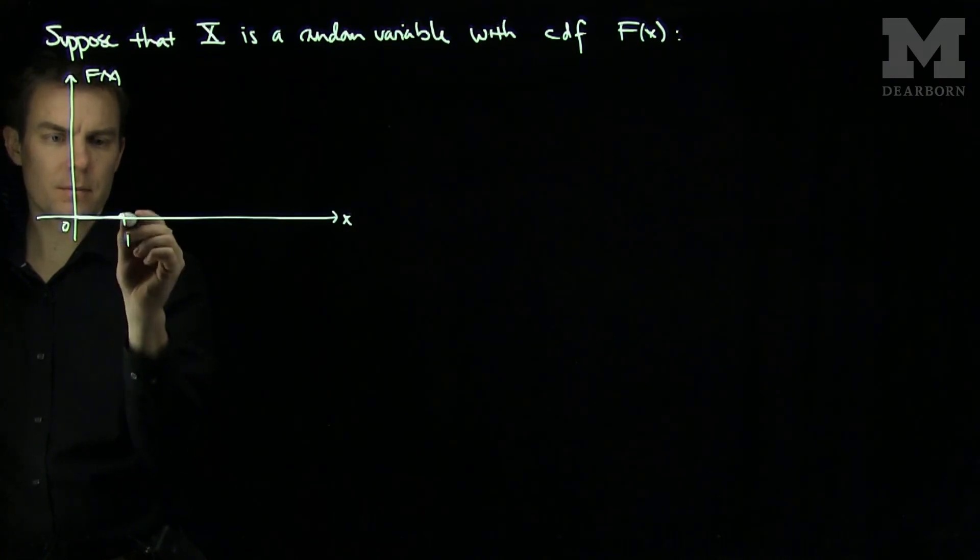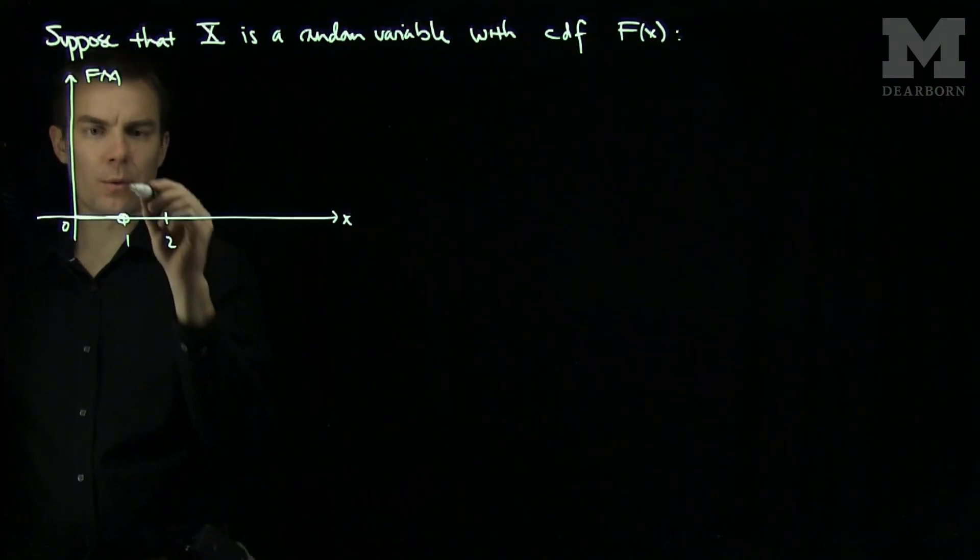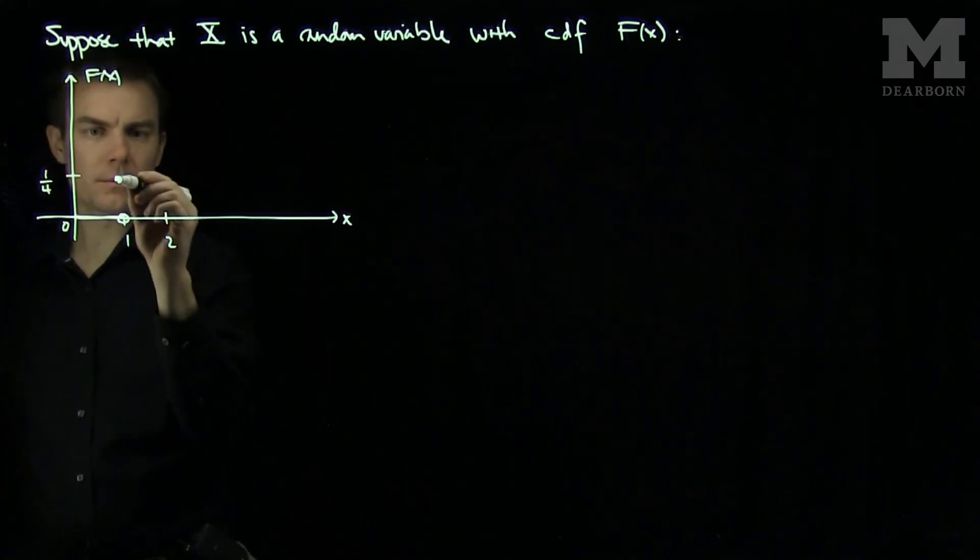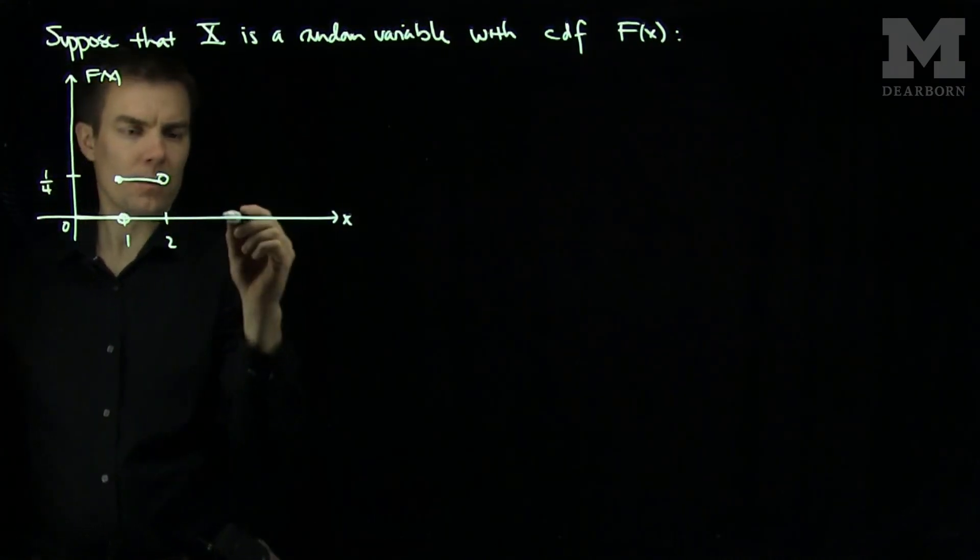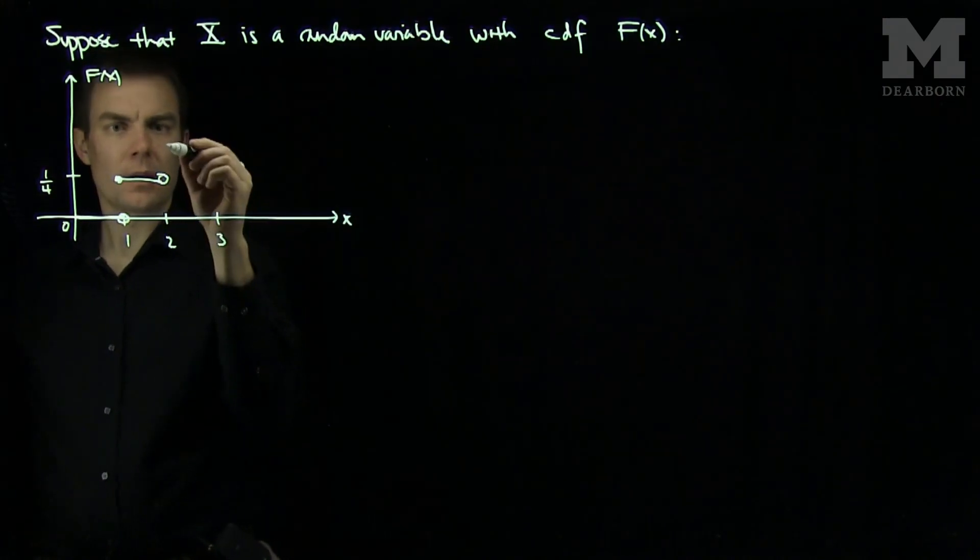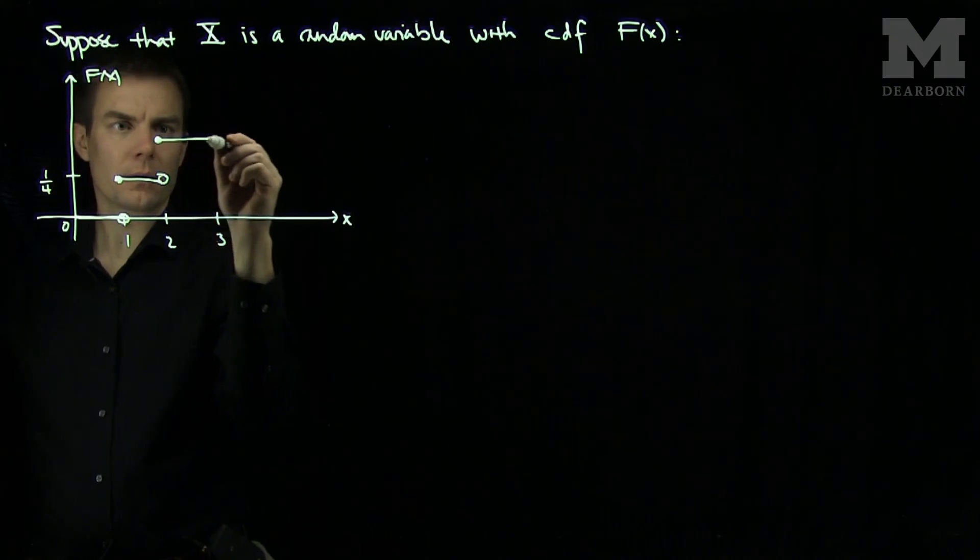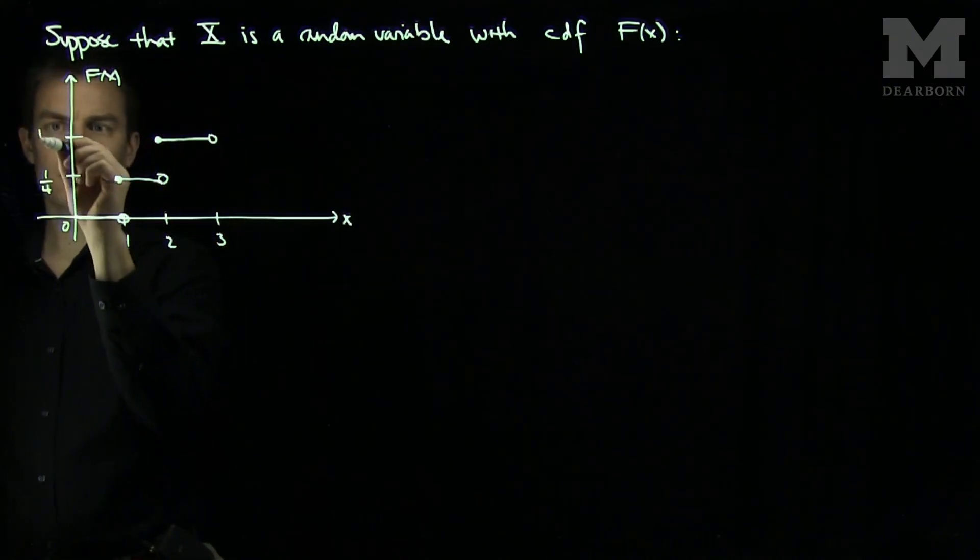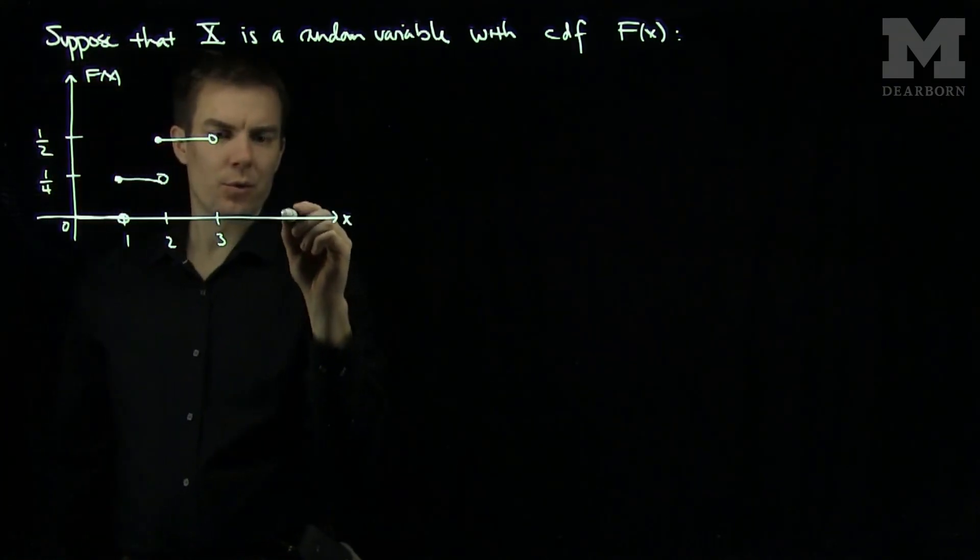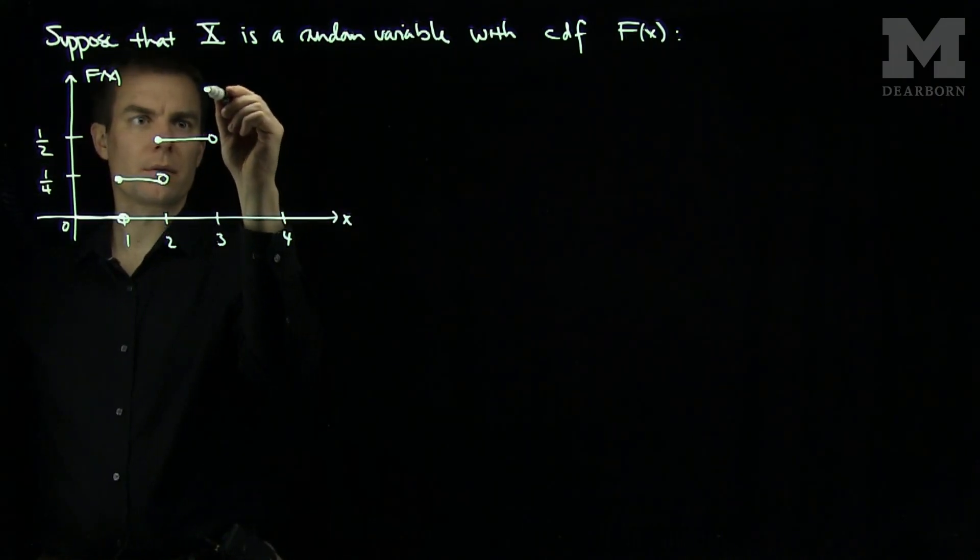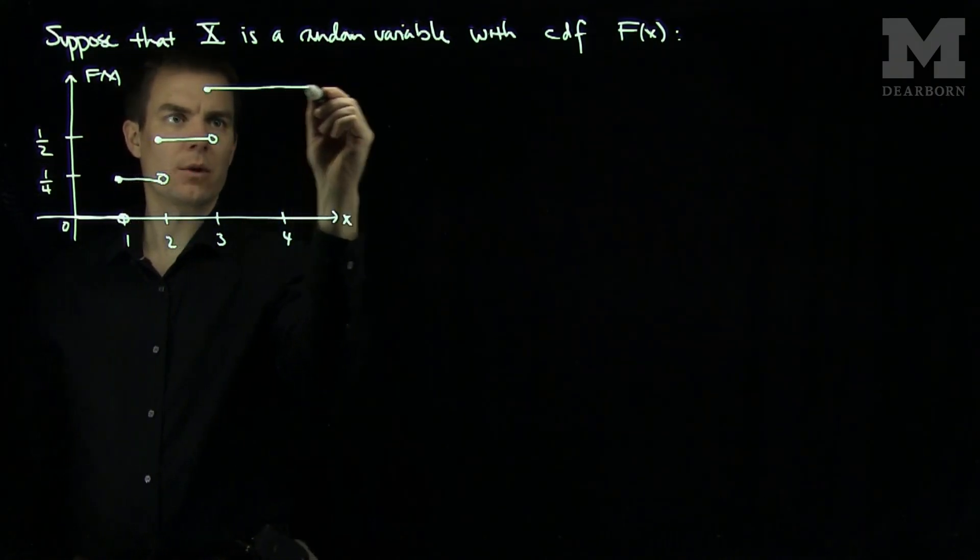Between 0 and 1 the CDF will be 0, and between 1 and 2 it will jump up to the value of 1/4. Between 2 and 3 it will jump up to the value of 1/2, and between 3 and 4 it will jump up to a value of 1, and it will stay 1 forever.